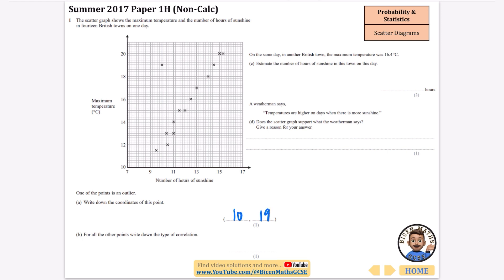For all the other points write down the type of correlation. It is going upwards like this which means that it is an example of positive correlation. We don't need to say if it's strong or weak but it probably is what we would say is strong.